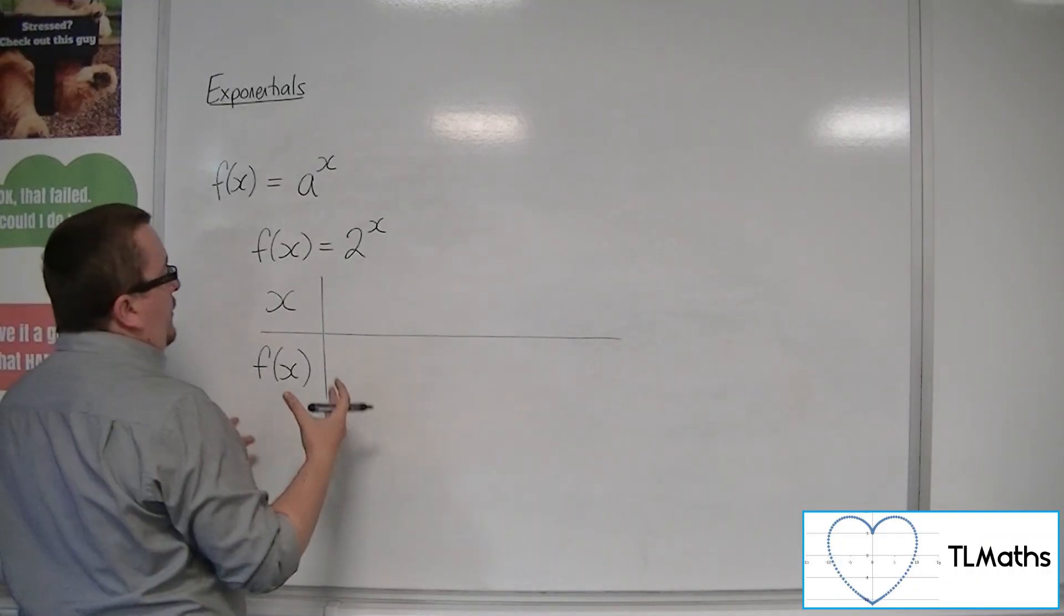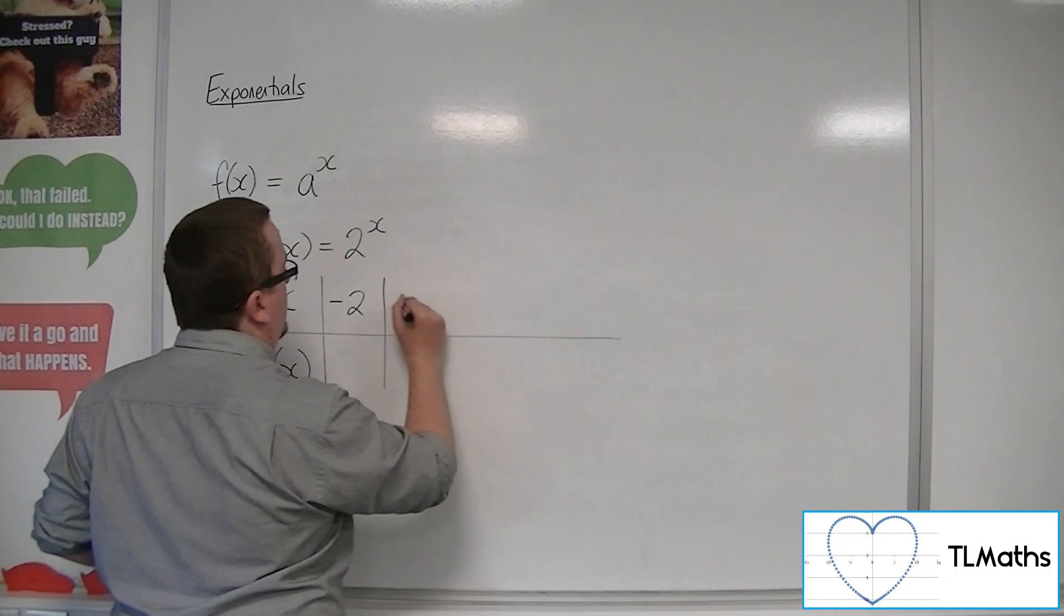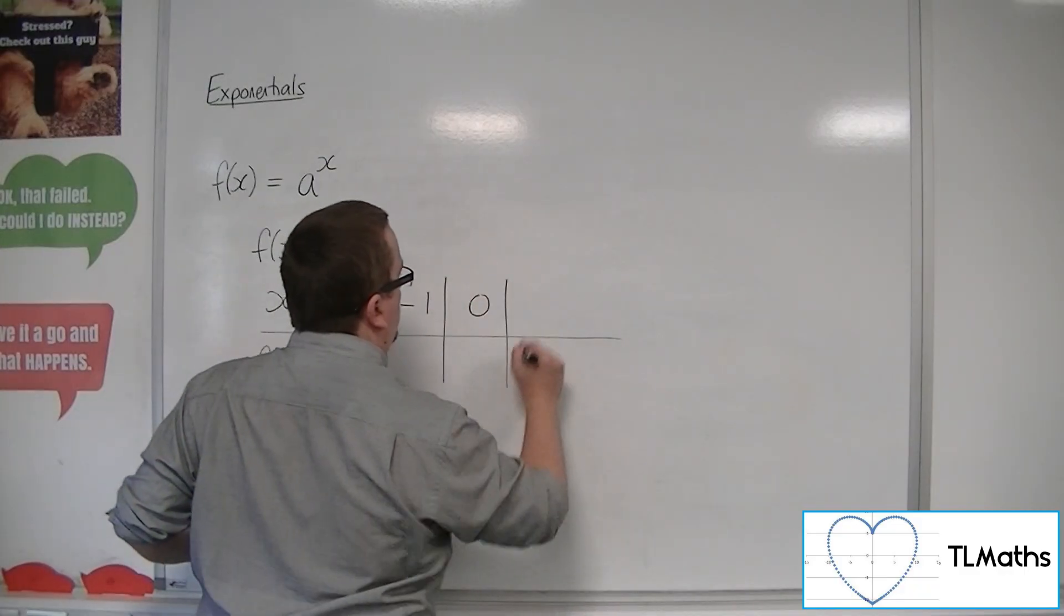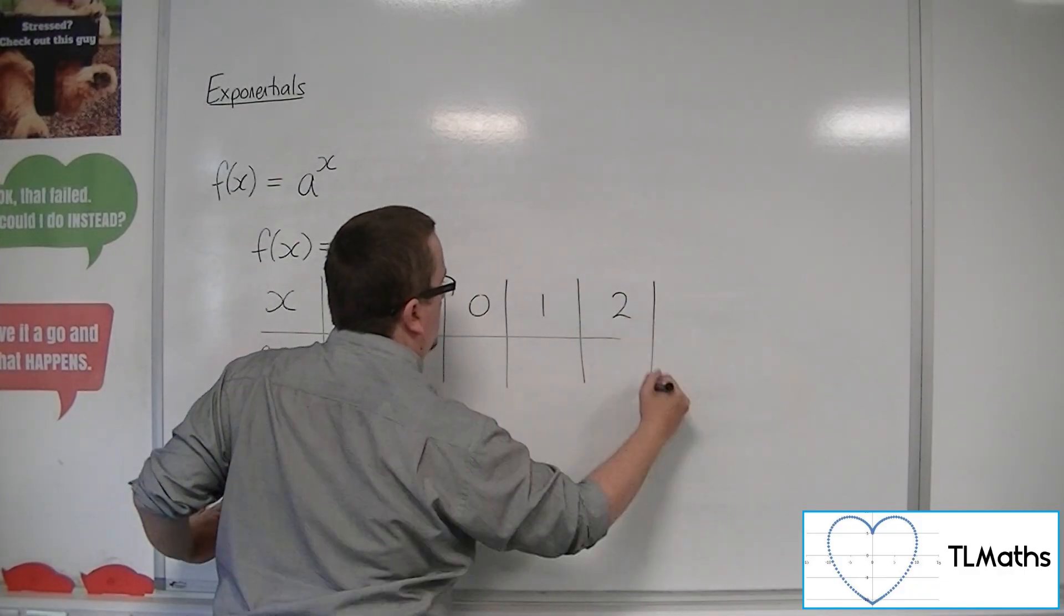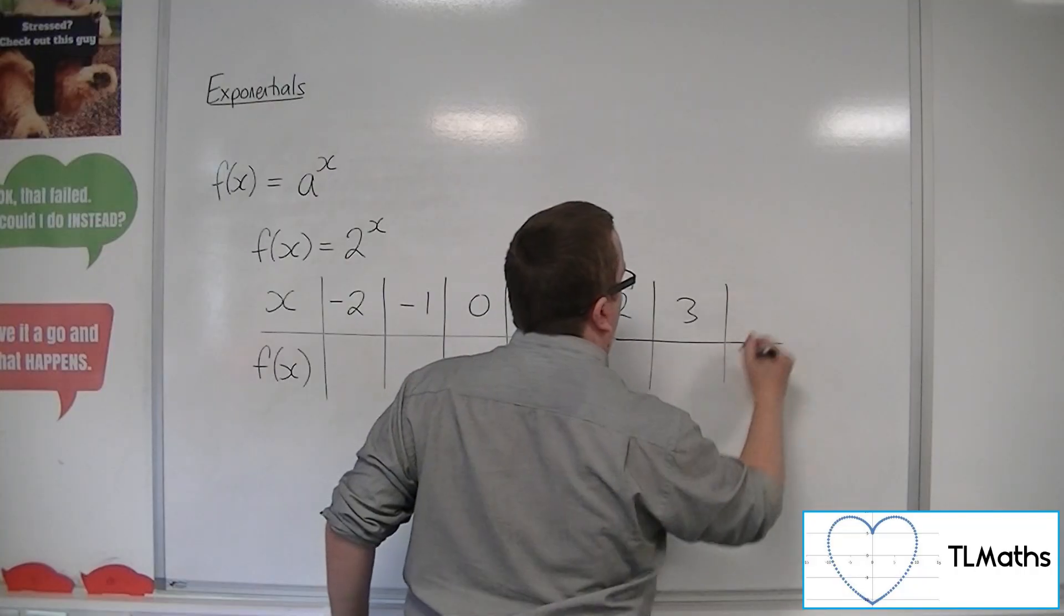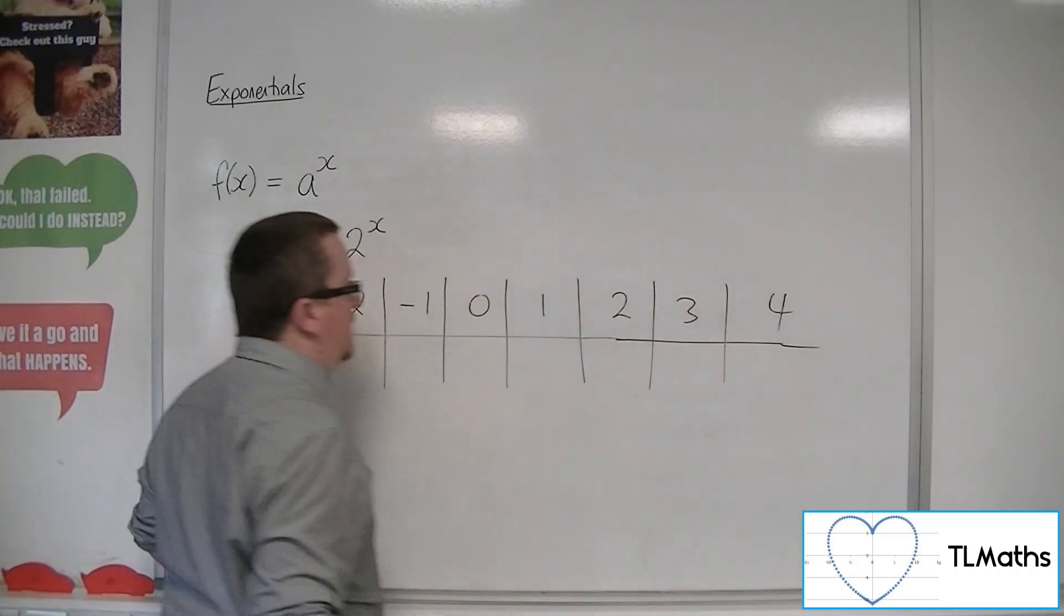So what we could start with is we could have minus 2, then minus 1, then 0, then 1, then 2. Let's keep going. 3, 4. Let's leave it there.